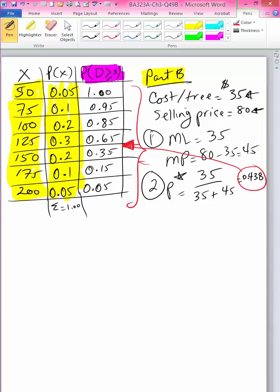Because it's a value between 0.35 and 0.65, because it falls there, we will select the level right above it, and therefore when the cost per unit is $35 and selling price is $80 per tree, our Q star is to stock 125 units.